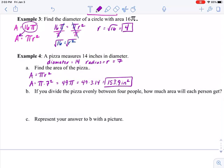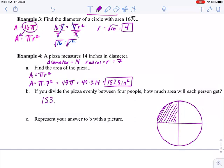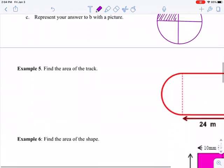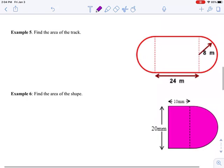If you divide the pizza evenly between four people, how much area will each person get? Well, let's go ahead and draw a picture. Here's my pizza, and I'm going to divide it into four pieces. So each person will get one fourth of the 153.9 square inches. So that gives me 38.5 square inches.